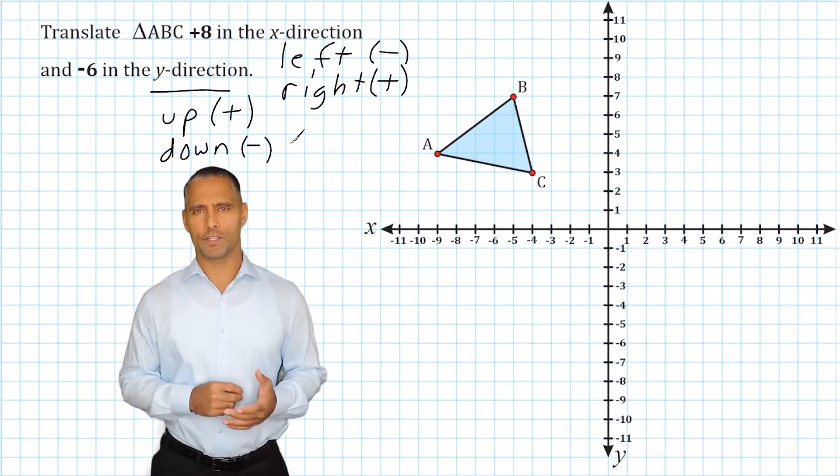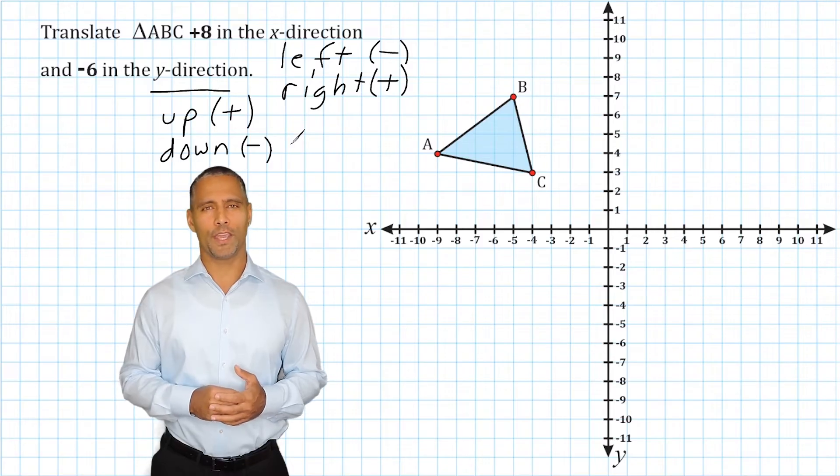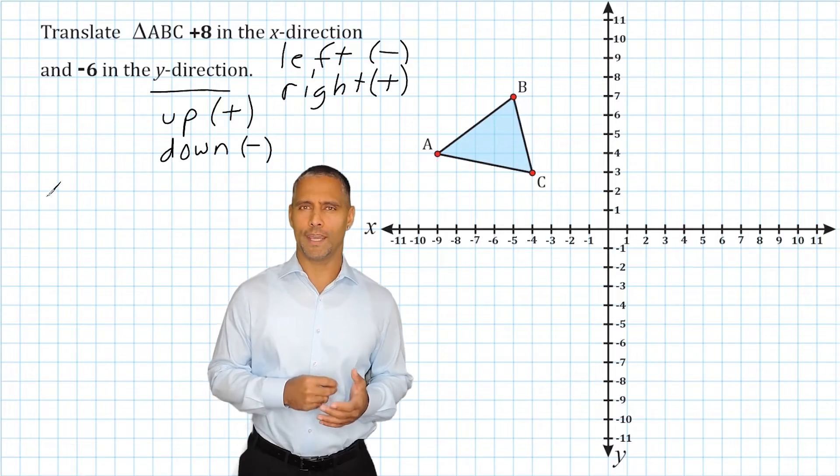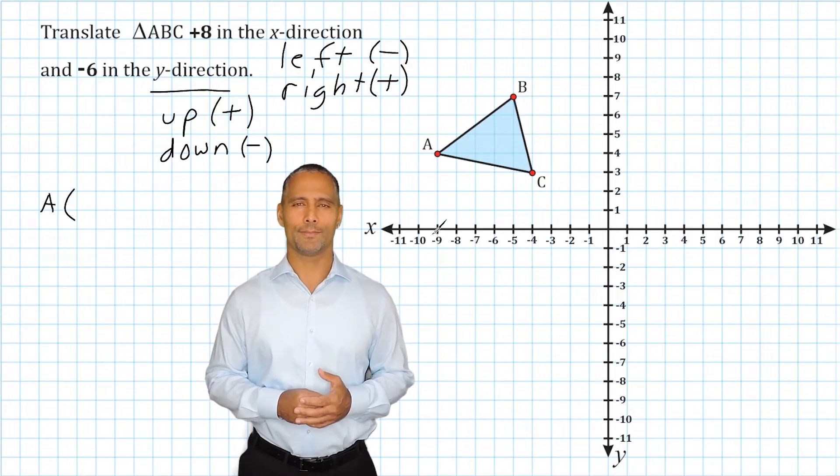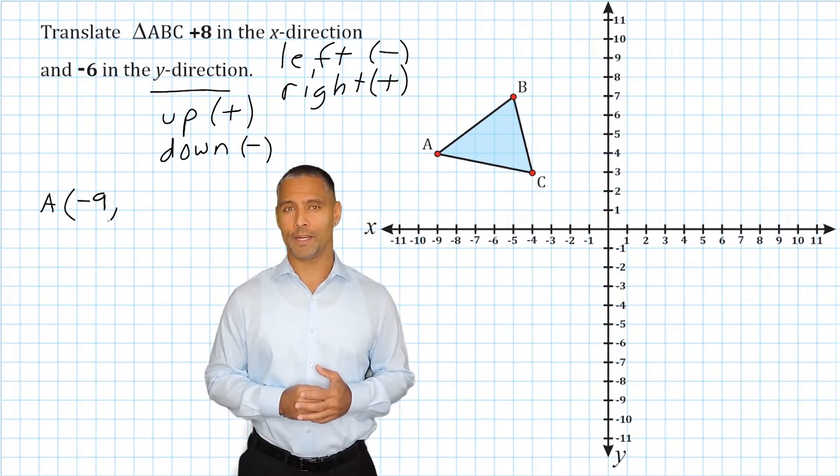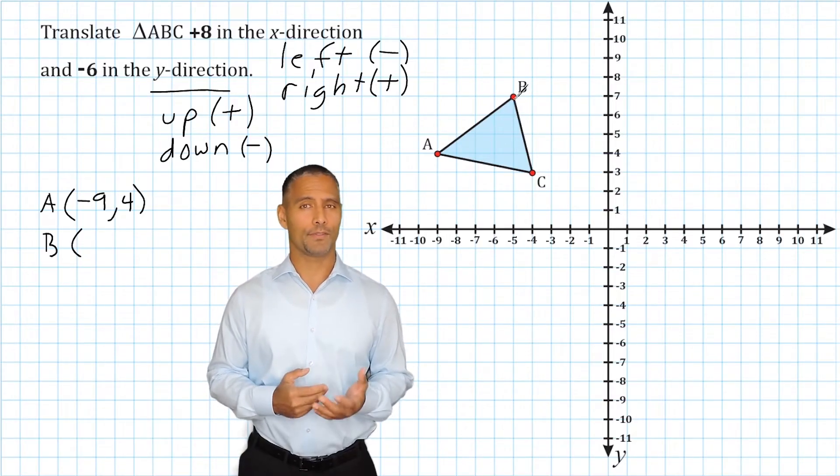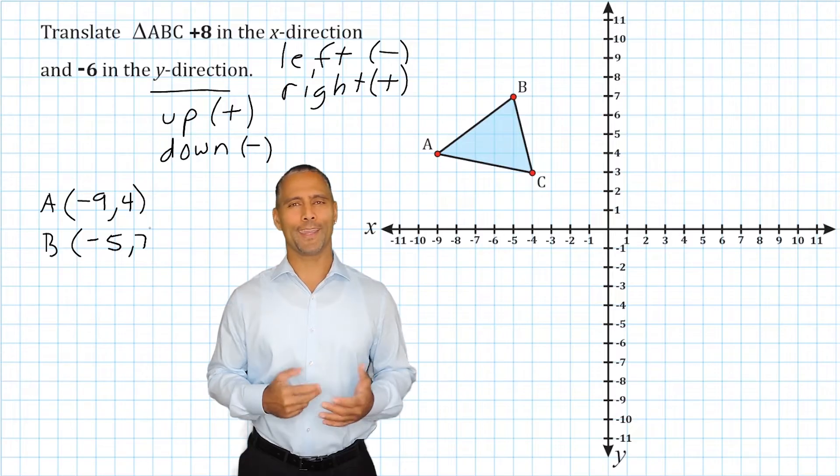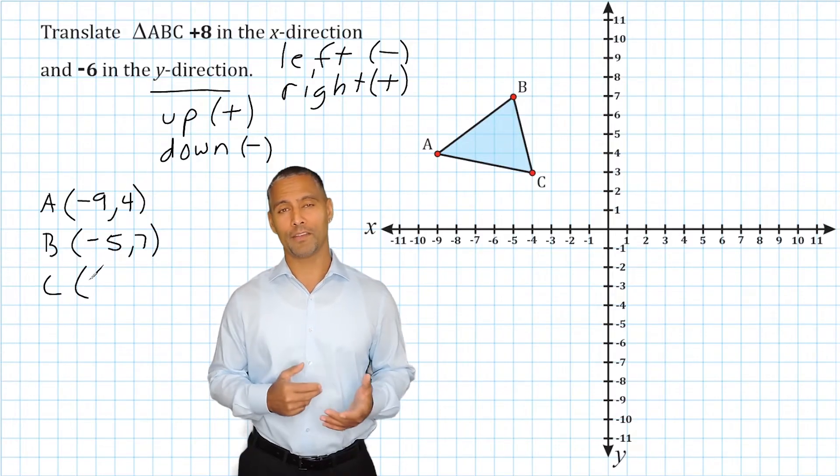We're going to use a little integer addition to find our new points. So let's start by labeling the current location of point A, which is at negative 9 and positive 4. Point B is currently located at negative 5, positive 7, and point C is located at negative 4, positive 3.